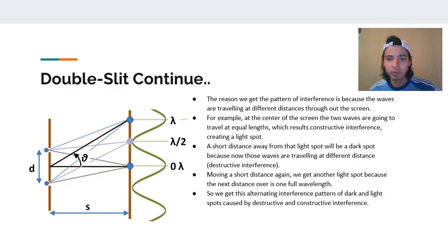Also, the reason we get the pattern of interference is because the waves are traveling at different distances throughout the screen. For example, at the center of the screen, the two waves are traveling at equal length, which results in constructive interference, creating a light spot. We see right here that when this line goes directly to this one and this blue dot goes directly to this one, both the wavelengths are equal. So it creates a bright spot right in the middle.